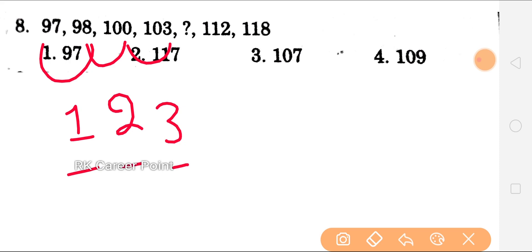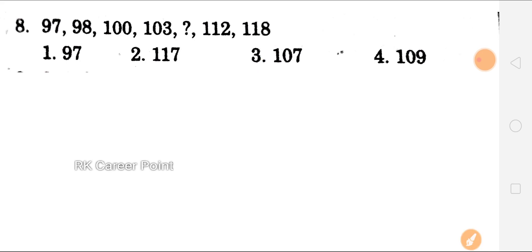Next question answer: 103 plus 4 = 107, so option 3, 107, is the right answer. Check: 107 plus 5 = 112, and 112 plus 6 = 118. So friends, this class ends here. It was quite lengthy. In the next class, we will explain model paper questions. So if you liked this class, please like the video and share with your friends who need it. Thank you friends, thanks for watching this video. Have a nice day, bye bye!